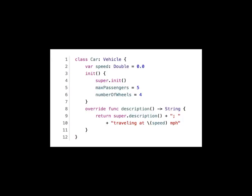Worth noting: in the Swift book, `super.init` is called first in the initializer, but according to Apple's lecture on memory management, `super.init` should always be called last — after all your parameters are set up — not first. This contradicts what's in their published book, and it's something to watch out for.